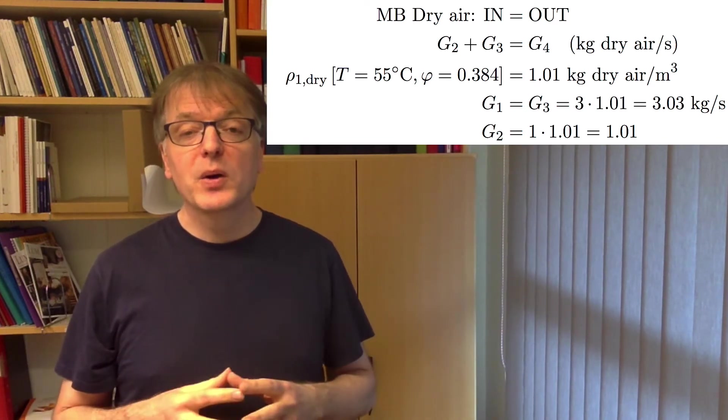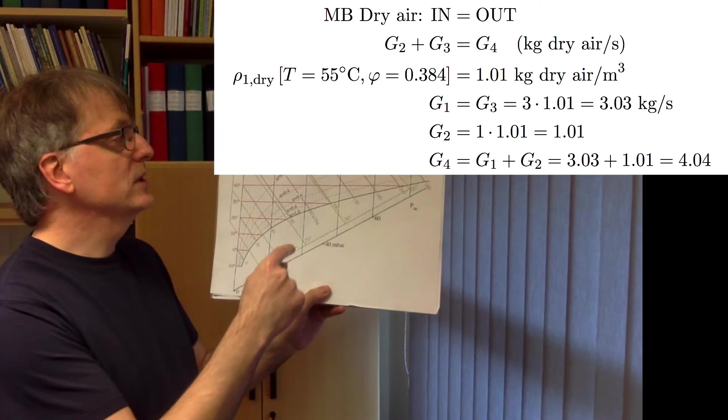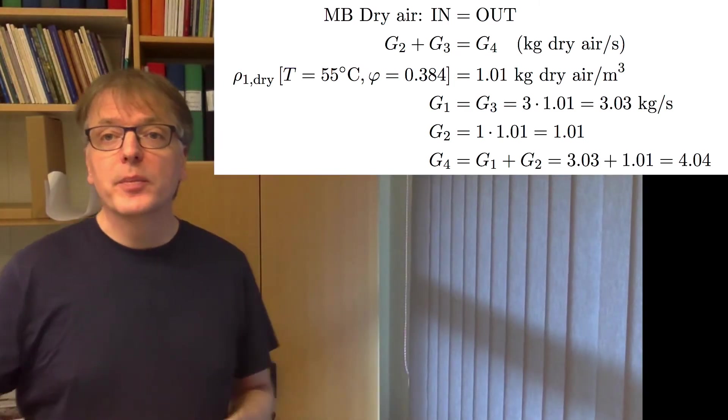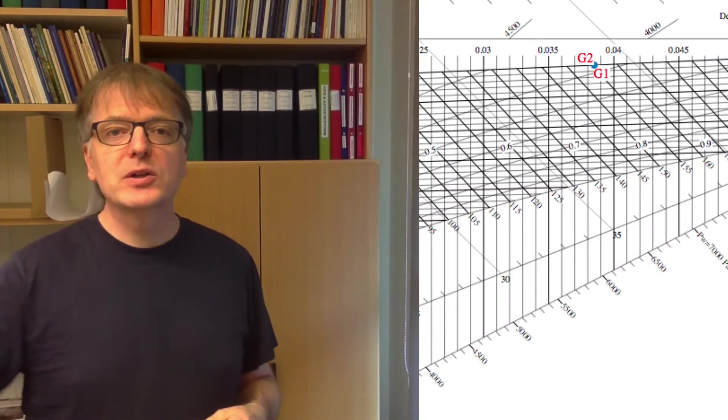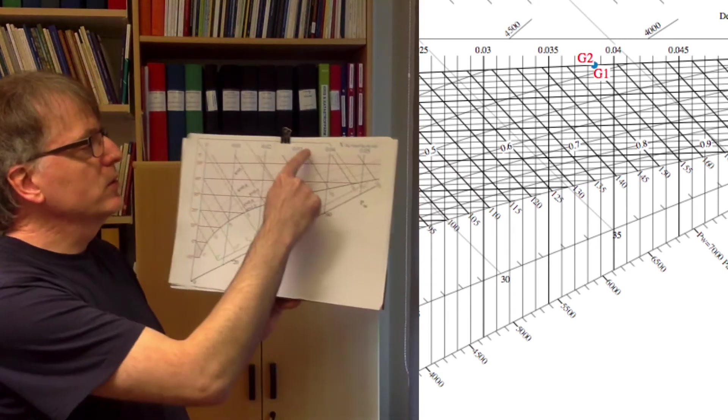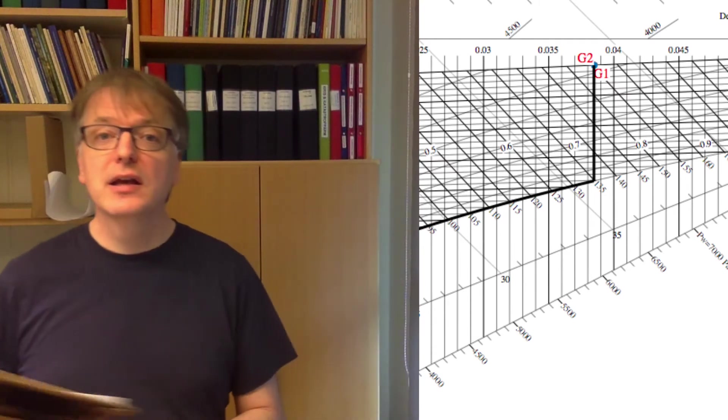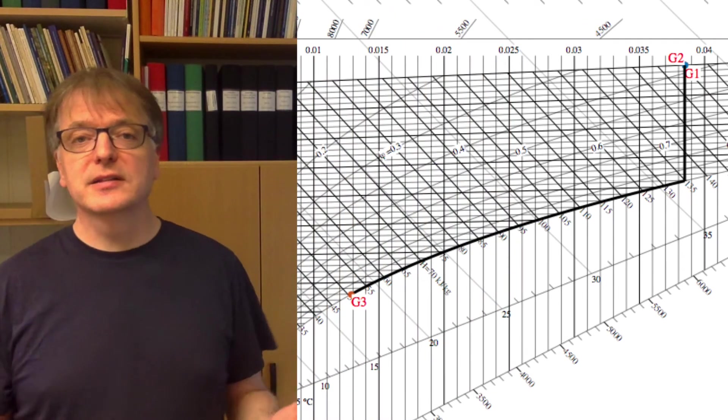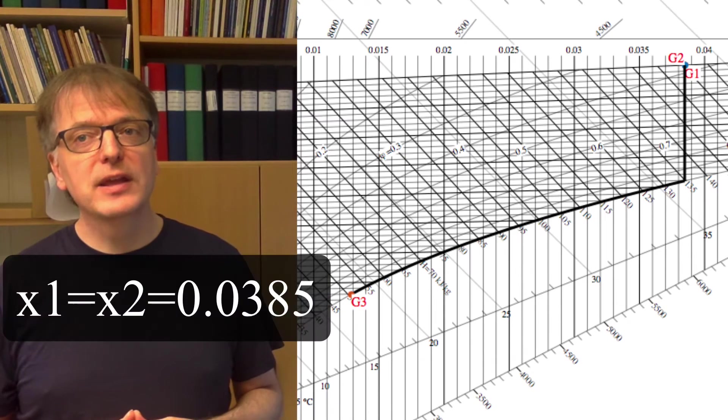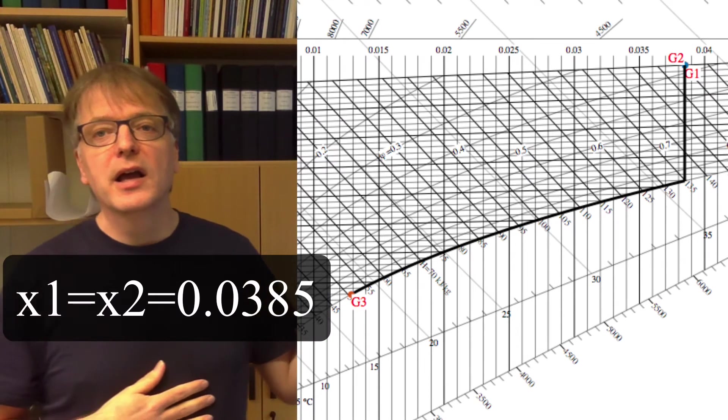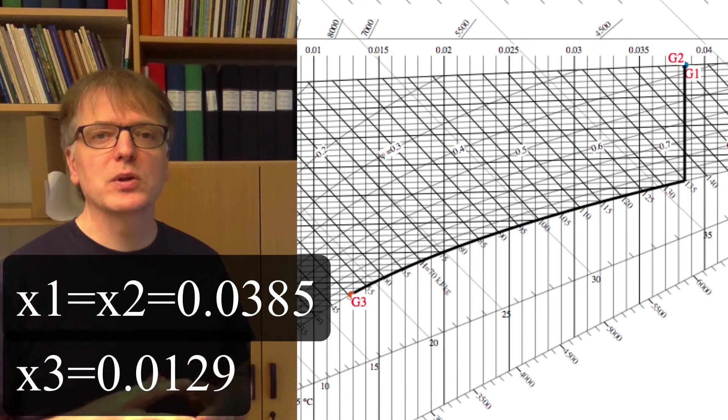And what about the water content? Well, we can read the water content for g1 directly in the Mollier diagram. But what about g3? We cool it down. When we cool something down, we go straight down until we hit the 100% humidity line, and then we follow that line down to the temperature we want to go to, in this case 18 degrees. So x1 and x2, that's 0.0385 according to the Mollier diagram, and x3 is 0.0129.